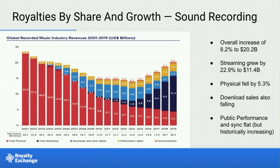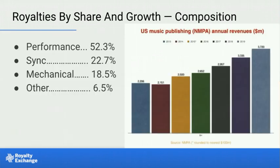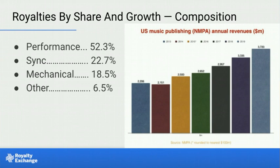Physical sales have fallen by 5.3%, and download sales are also falling. Public performance and sync are largely flat year over year, but higher than their historic levels. For publishing, the National Music Publishers Association reports that US music publishers generated $3.72 billion in revenues in 2019, up 11.6% year-on-year. Of that figure, 52.3% came from performance royalties, 18.5% (about $497 million) came from mechanical royalties, and 22.7% came from synchronization royalties.